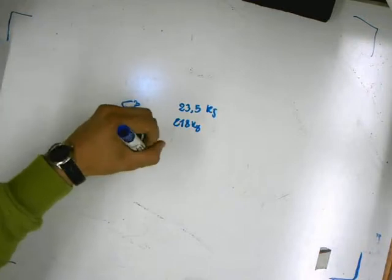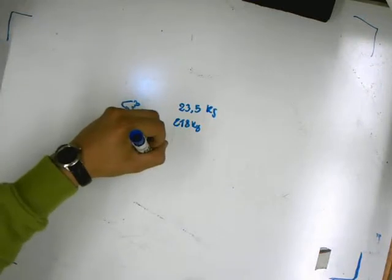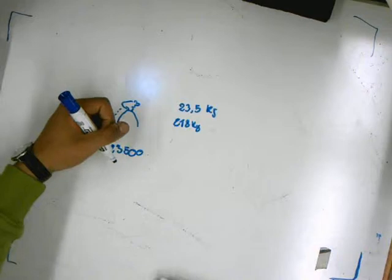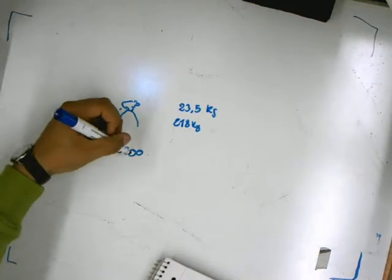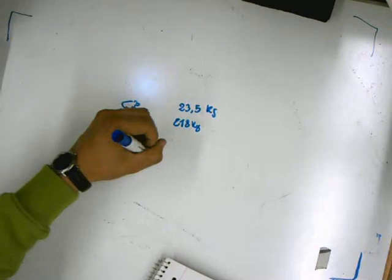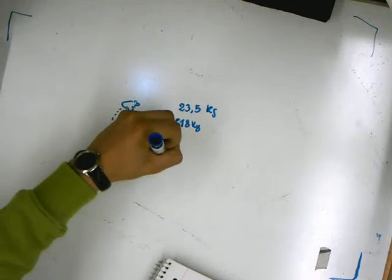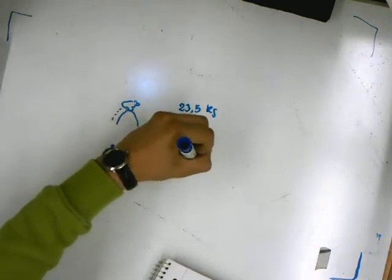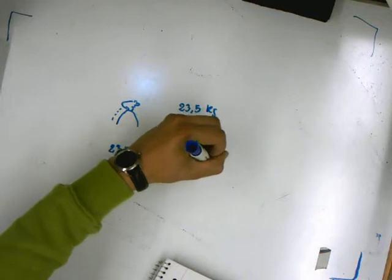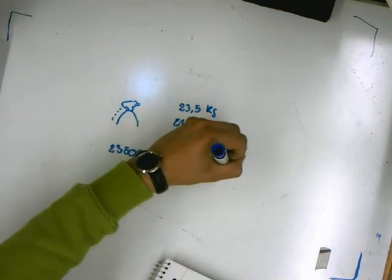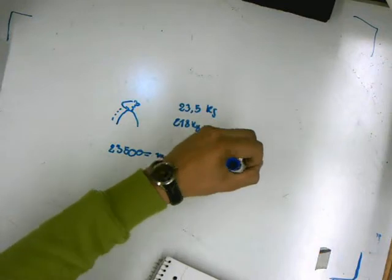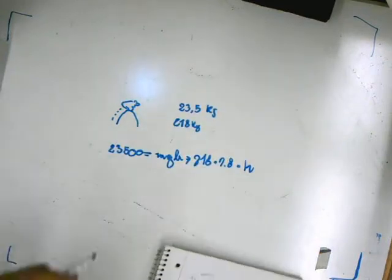We put it in the equation for potential energy with gravity, which is PE = mgh. So it's 218 times 9.8 times h, where h is the altitude.